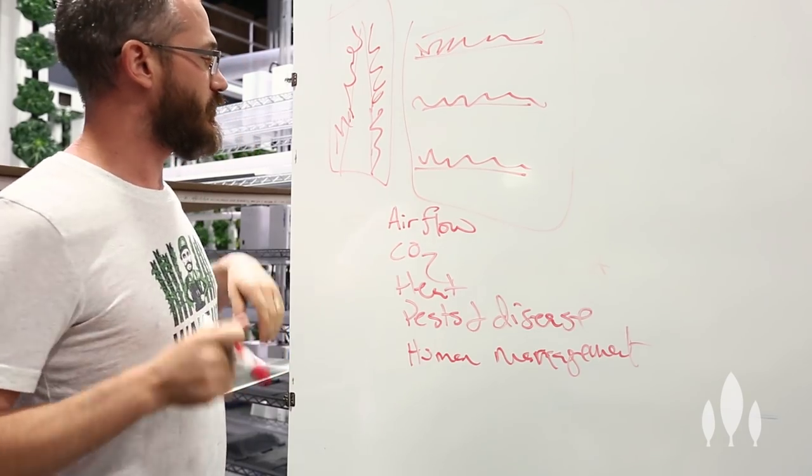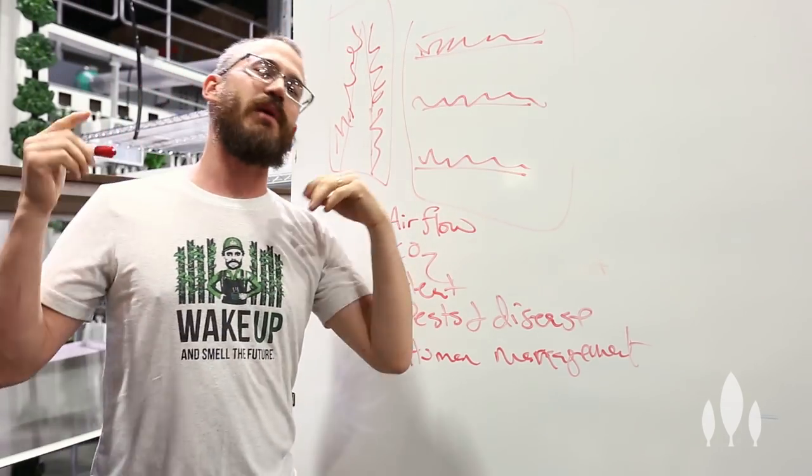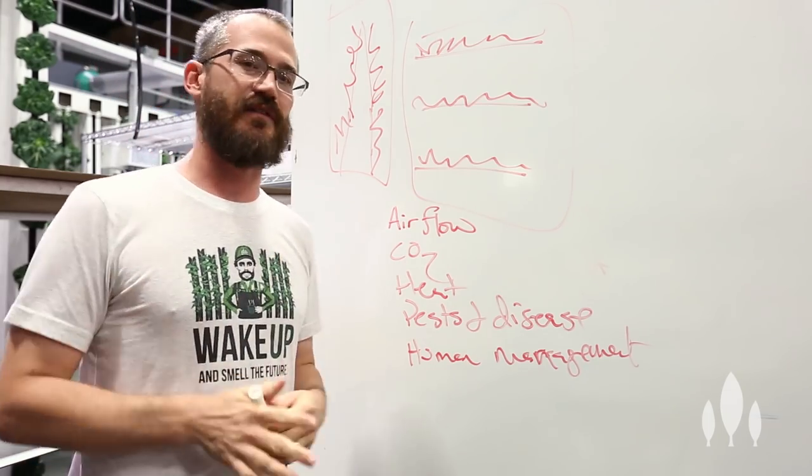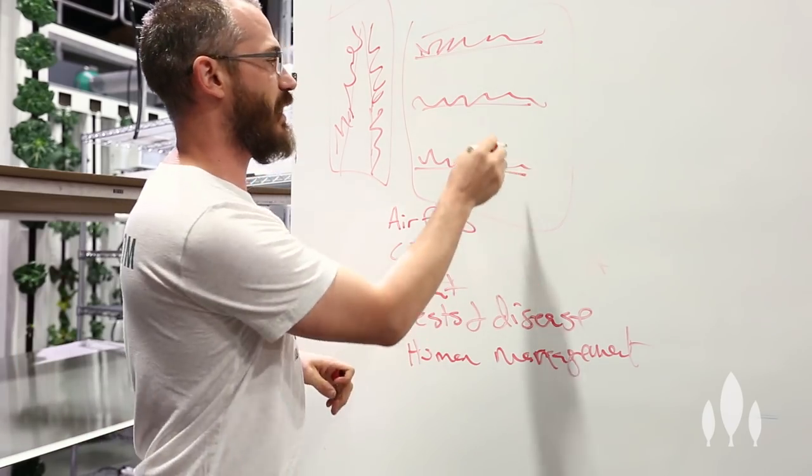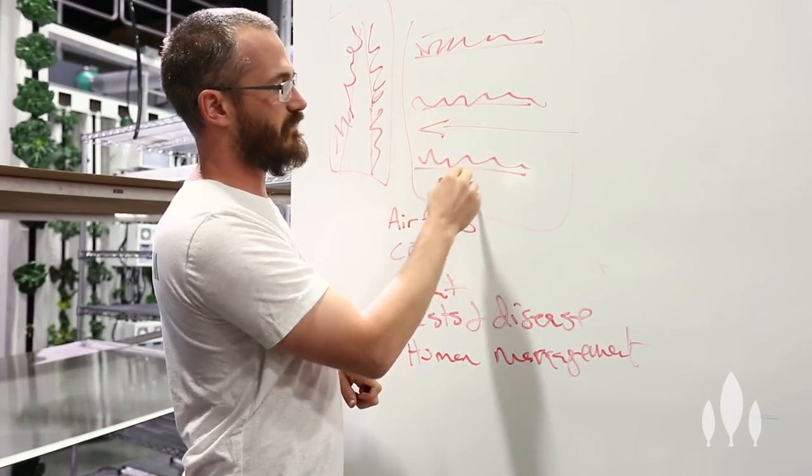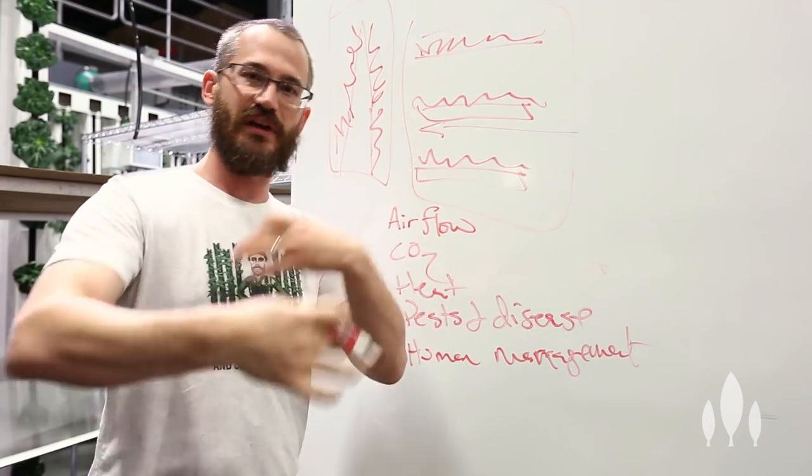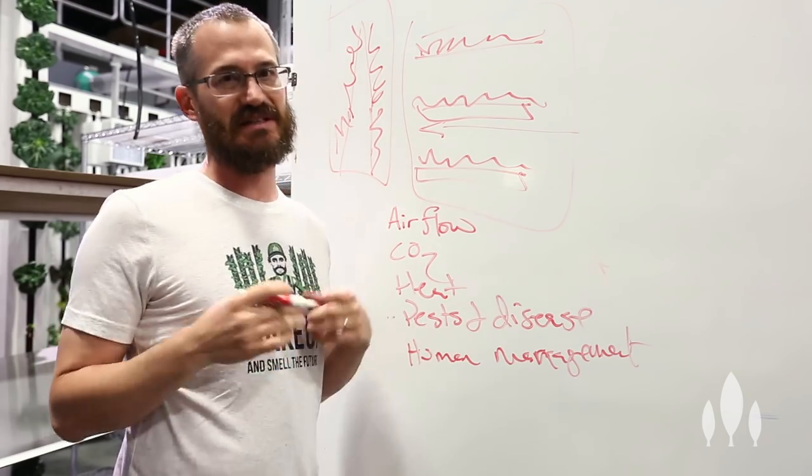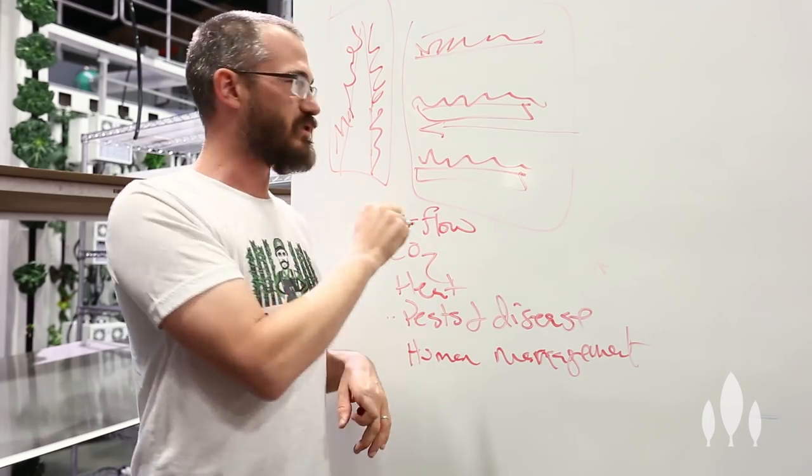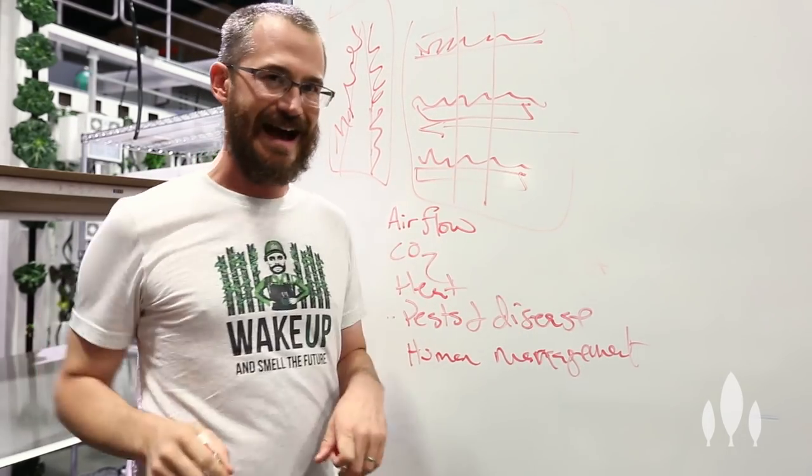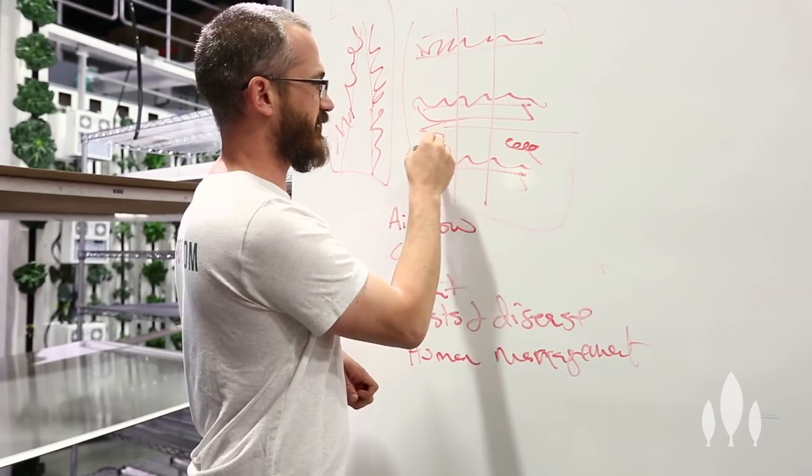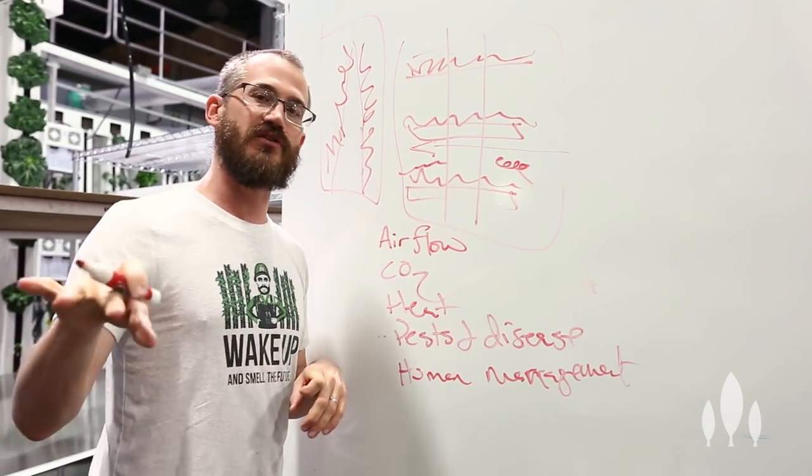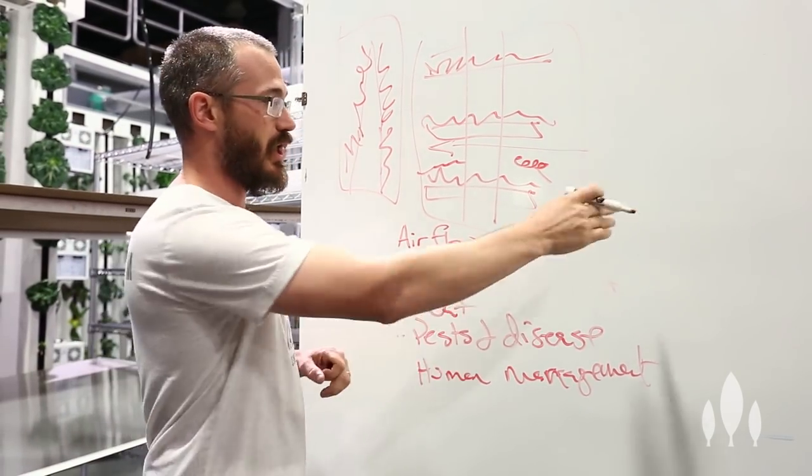All right, so jumping right into this, when we talk about airflow in these systems, we're talking about one of the most important things that are incorporated into the design thinking on the front end, and then management practices as the facility becomes operational. When we're talking about airflow, we're talking about removing air from the interior of these racks, so that we're circulating this air around the plants. This does a few different things. It's removing humidity, which of course impacts our pests and disease management. We're removing humidity, we're introducing more CO2 because CO2 depletion here in the middle in this zone is high.